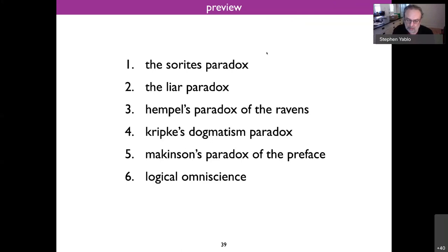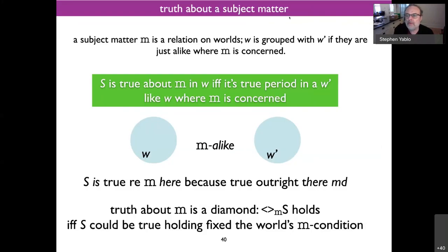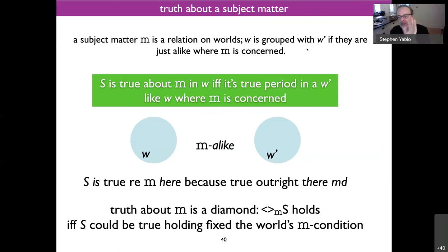So we'll start with Sorites. First, a notion I didn't explain before — a couple of theoretical slides. What is a subject matter? This probably isn't the final definition we want to give; it's the definition I used in the book Aboutness. Various refinements due to Kit Fine would be helpful in connection with some of these examples, but for now it's simplest to just think of a subject matter as a relation on possible worlds.